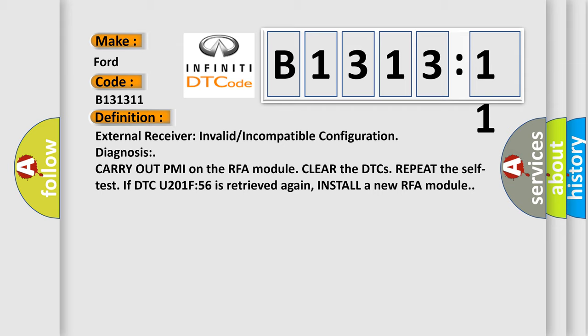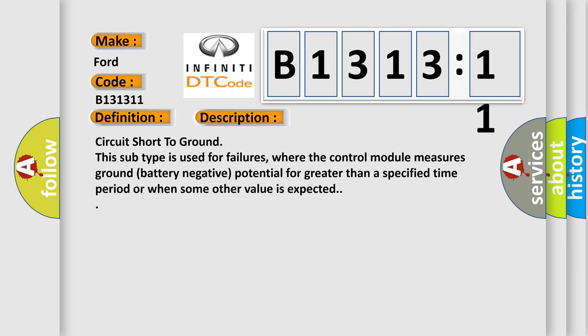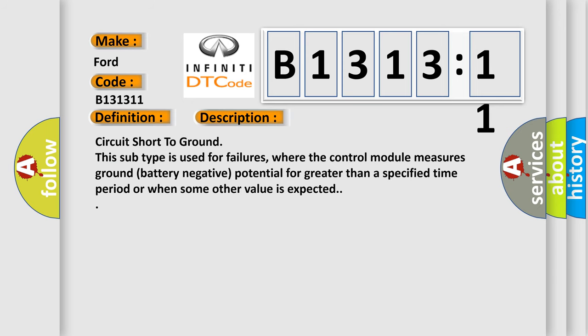If DTC U201F56 is retrieved again, install a new RFA module. And now this is a short description of this DTC code.